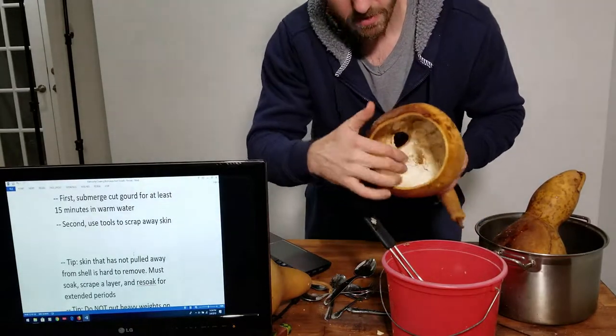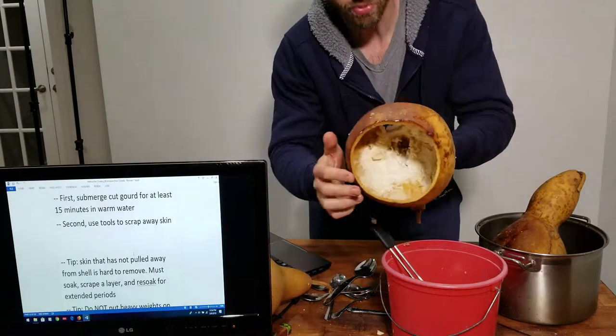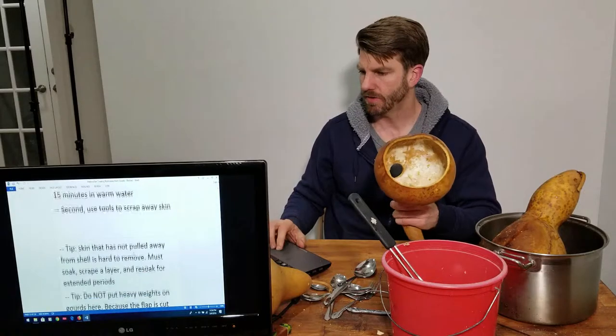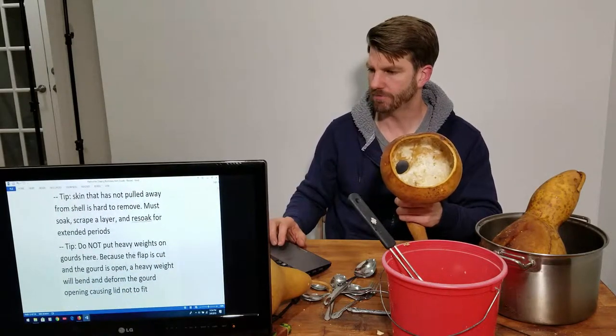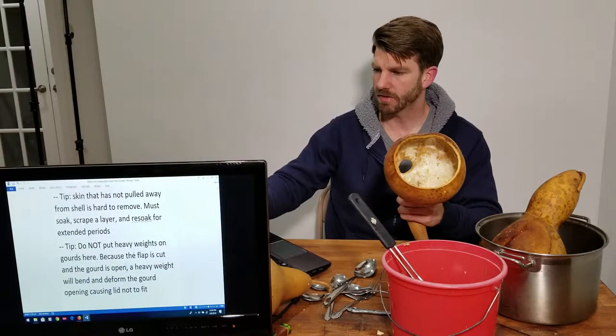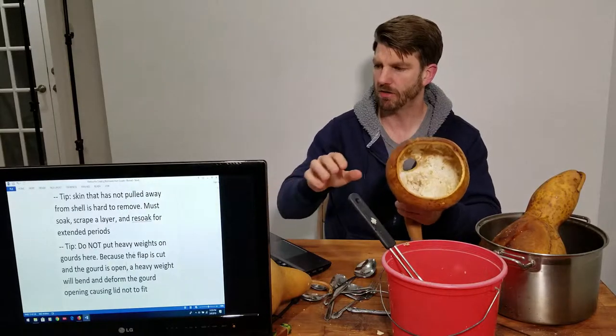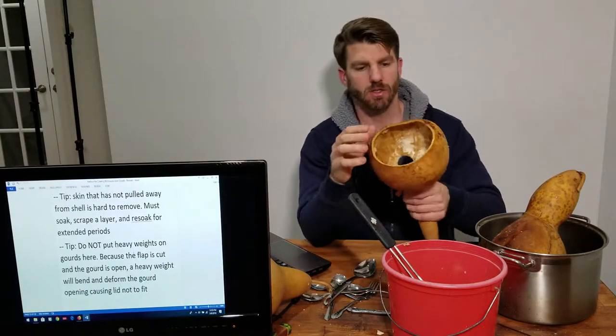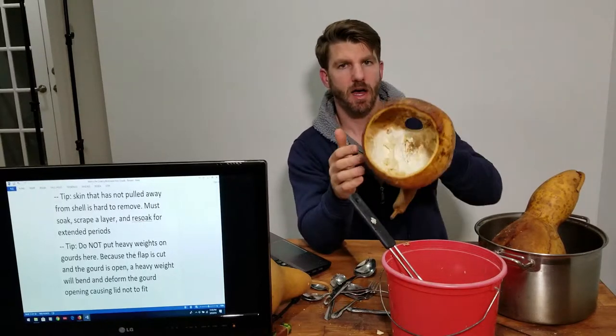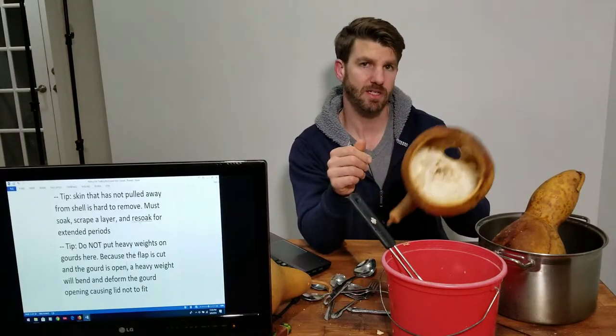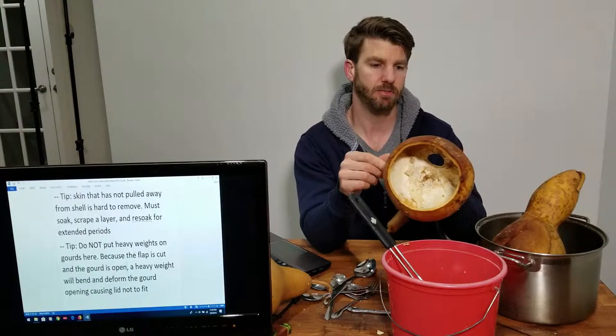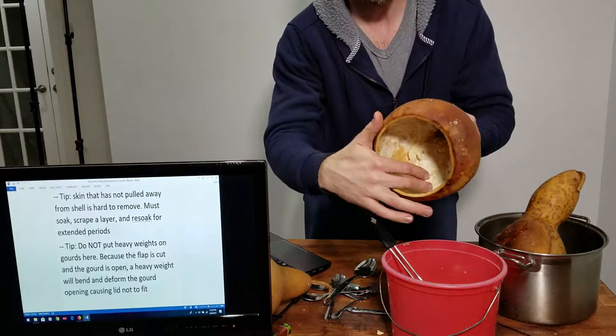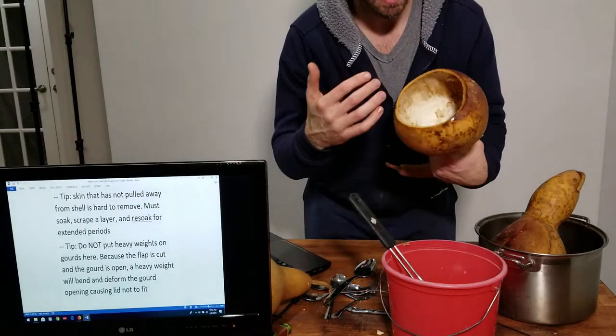These parts are still pretty tightly attached to the inside. A tip: skin that has not pulled away from the shell is hard to remove, so you scrape off the top layer that's soft and then re-soak for another 10 or 15 minutes and scrape off the next soft layer.